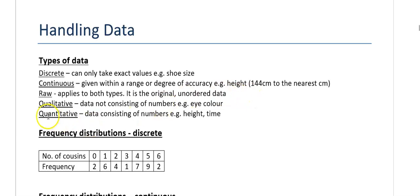Raw data is just the original data — the original thing you have surveyed. Once it's put into a table, the original information is often lost. Qualitative data is data not consisting of numbers, such as eye color — anything you have to describe and can't describe numerically, which makes it mathematically more difficult to work with. Quantitative data is data consisting of numbers: height, speed, time, age — any of these things.